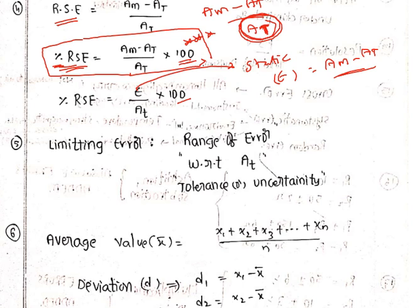Next: limiting error. The range of error with respect to true value is nothing but limiting error. Limiting error is also called tolerance or uncertainty.